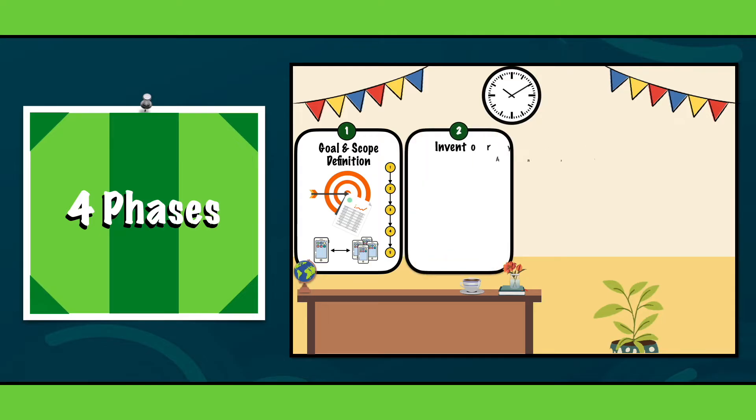Second, inventory analysis. The second phase encompasses the collection of data on all inputs and outputs associated with the product. We look at raw materials, energy consumption, emissions and waste generation. This step is vital because accurate data is the backbone of a successful SLCA.